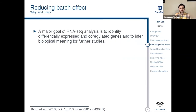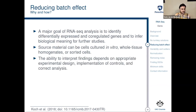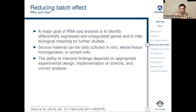A major goal of RNA-seq analysis is to identify differentially expressed genes or co-regulated genes, and to infer biological meaning from further studies. The source material can be cells cultured in vitro, whole tissues, sorted cells, or all kinds of things. The ability to interpret the findings depends on the appropriate experimental design and the implementation of controls and correct analysis. Controls are a key word here — you should be thinking about positive and negative controls all the time.